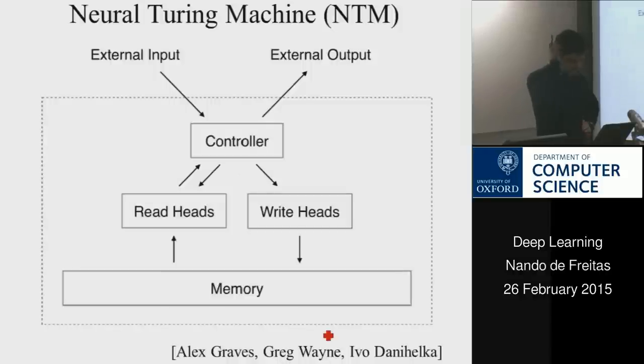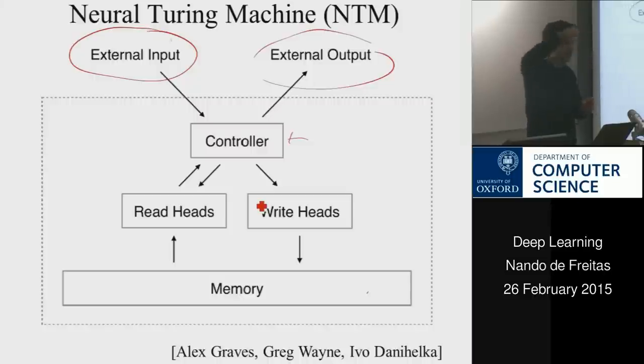And more recently, Alex and some other folks at DeepMind implemented this neural Turing machine, which is very, again, we saw memory networks in the last lecture. The Turing machine has a controller. It's essentially an architecture of a typical Turing machine. You have read heads, write heads, and you have some sort of memory. And it would take data as input, an input sequence, an output sequence,